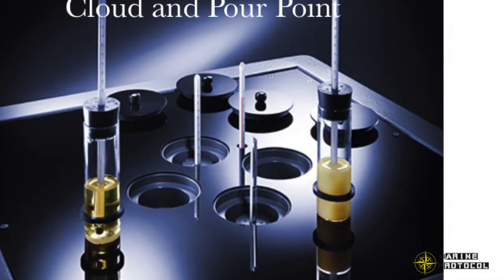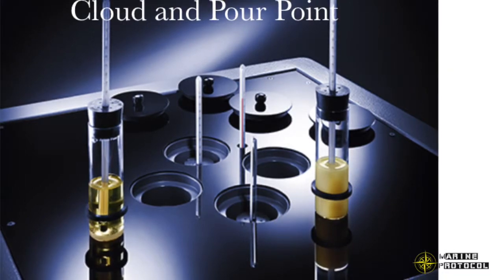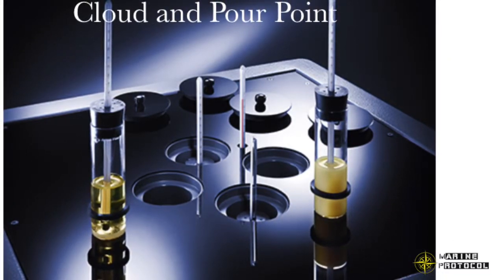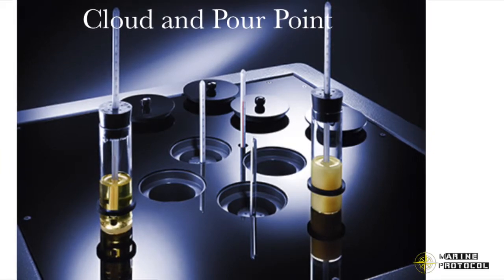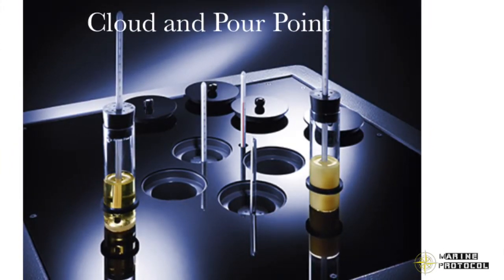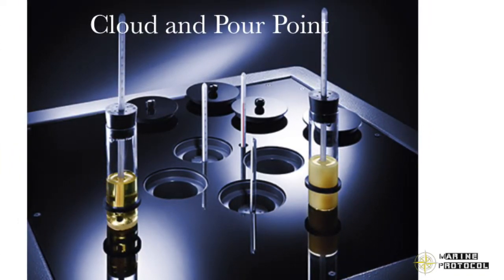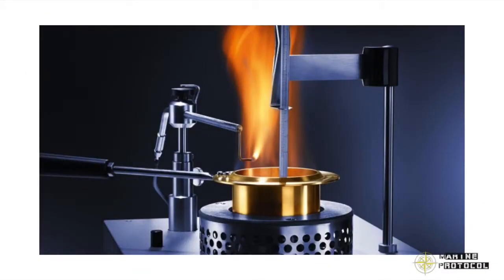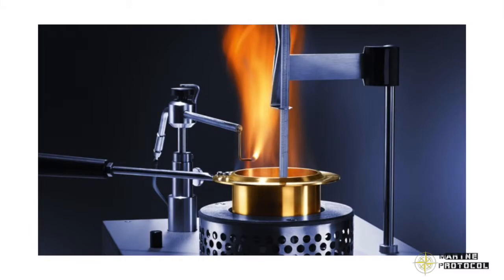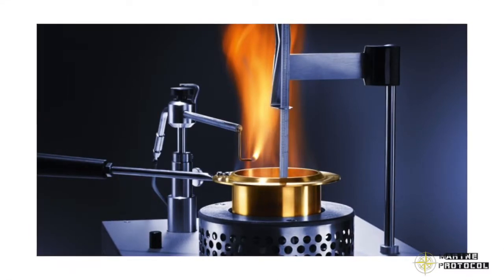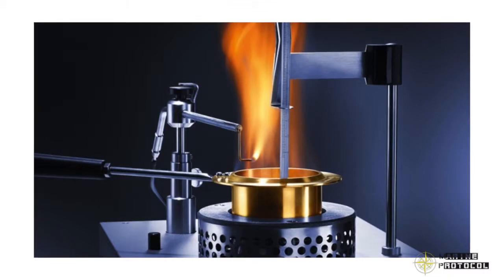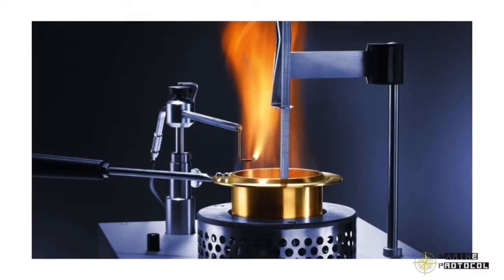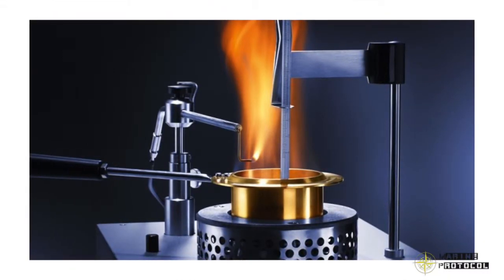What is pour point? It is the lowest temperature at which an oil will barely flow. Pour point indicates whether the oil is suitable for cold weather or not. Pour point of engine crankcase oil should be minus 18 degrees Celsius. What is flash point? It is the lowest temperature at which the oil will give off sufficient inflammable vapor to produce a flash when a small flame is brought to the surface of the oil. Close flash point for crankcase lube oil is around 220 degrees Celsius.